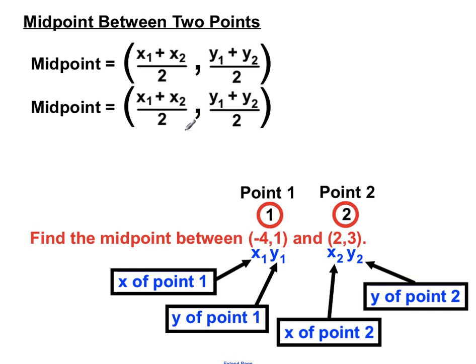First, we're after x1, so we look down here and that's -4, so we'll substitute in and replace that x1 with -4. Then we're looking for x2, which is 2, so we'll put that in there. Then y1 is 1, so that goes in there, and y2 is 3.